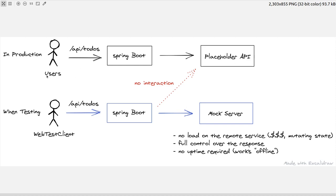We have a Spring Boot application which exposes a public HTTP endpoint. In the production environment, users or clients request data from this API, which our Spring Boot backend will process. For this processing, our backend will reach out to another system — in this example a public dummy API called the Placeholder API — but in general it could be any remote system, like a PayPal, weather, geolocation, or Stripe API.